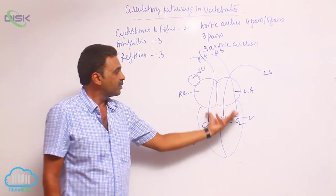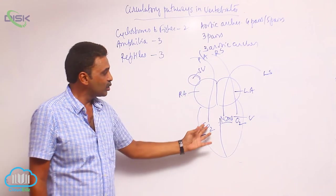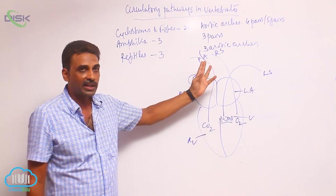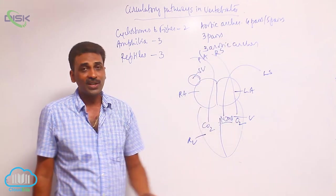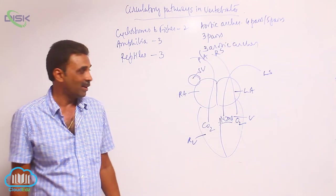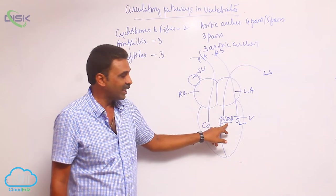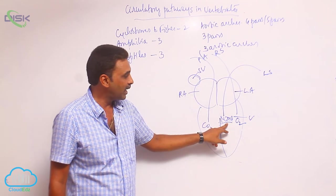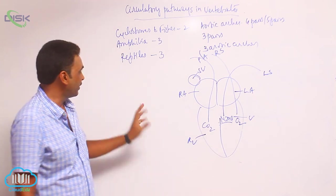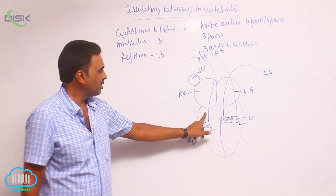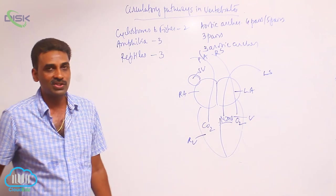All three aortic arches directly originate from the ventricles. The pulmonary arch originates from the right ventricle and the two systemics directly originate from the left ventricle. The left systemic takes mixed blood, the right systemic takes oxygenated blood, and the pulmonary arch always takes deoxygenated blood.